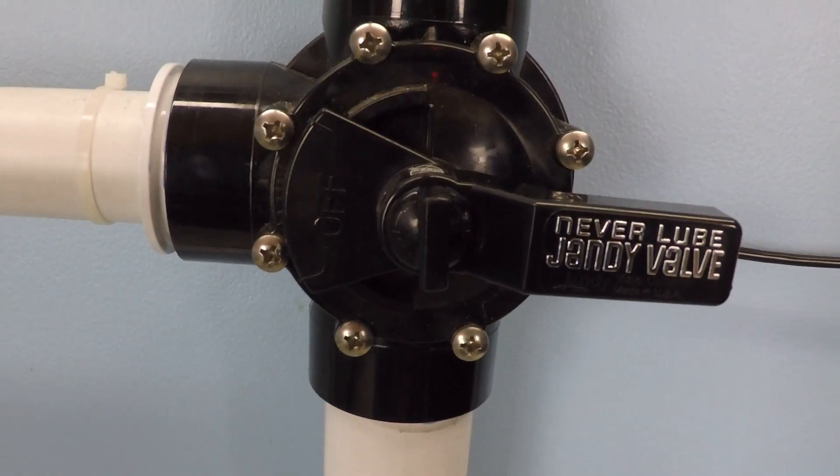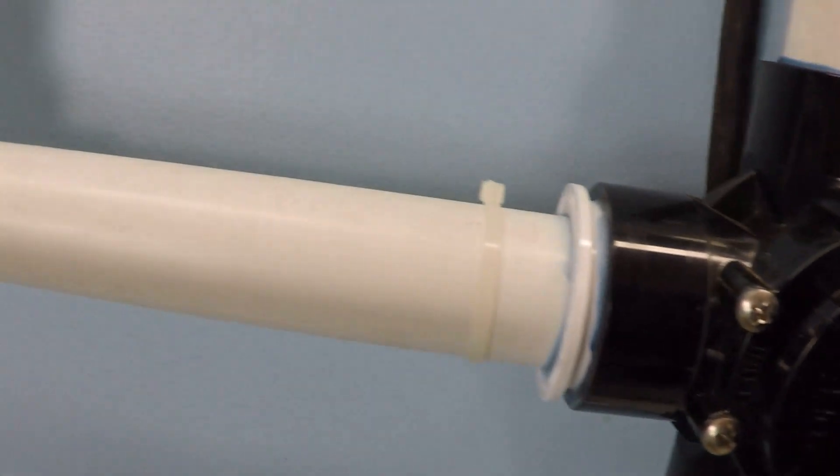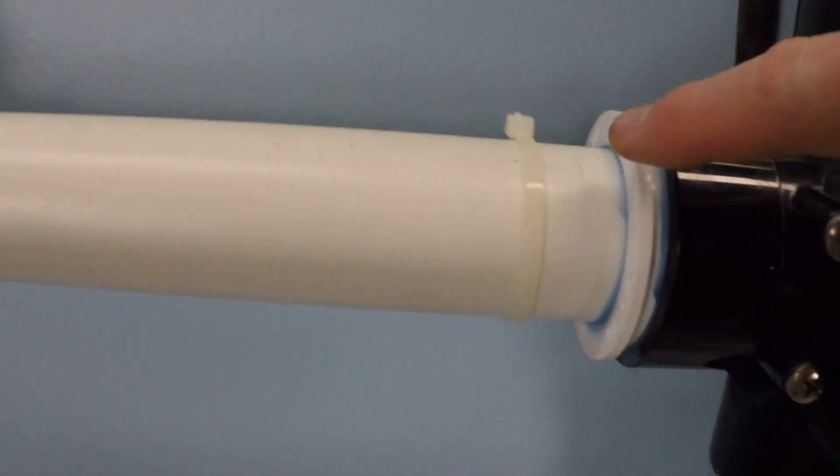So this one in particular is a 2.5 by 2 inch. You can see that's an inch and a half pipe there. So there's a reducing bushing there. 2 inch pipe at the top, 2 inch pipe at the bottom.